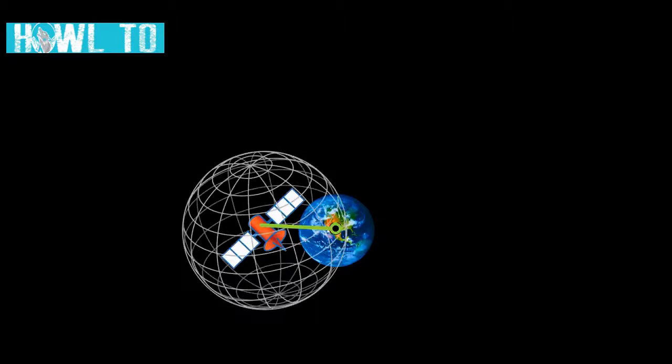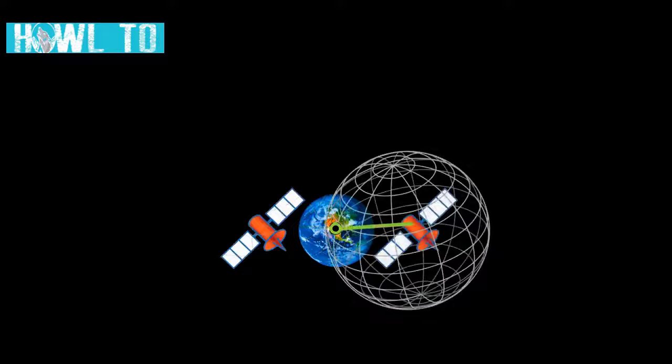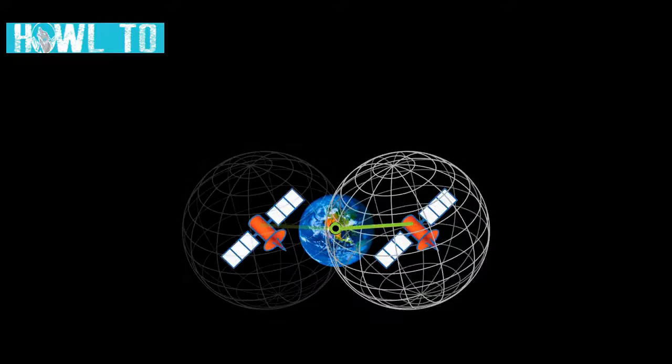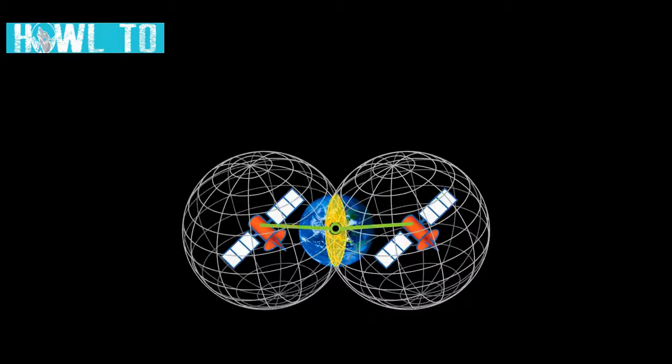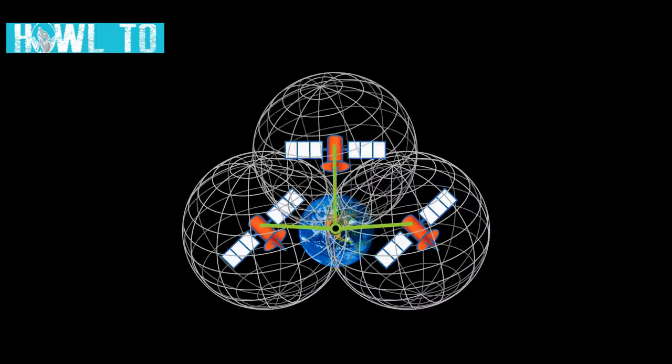With one satellite, the receiver knows that it's located on a sphere around that satellite with a radius equal to the calculated distance. Do the same calculation with the second satellite. The intersection of these two spheres narrows the location to the circumference of a circle. Then with the third satellite, the receiver can reduce the location to a single point.